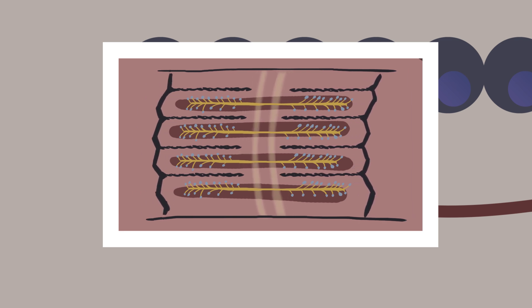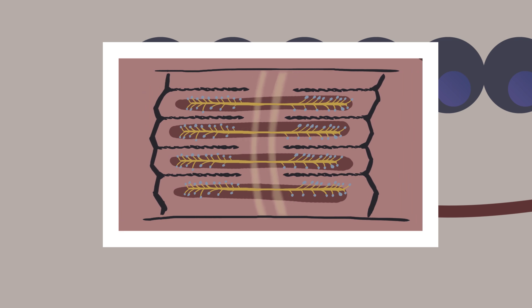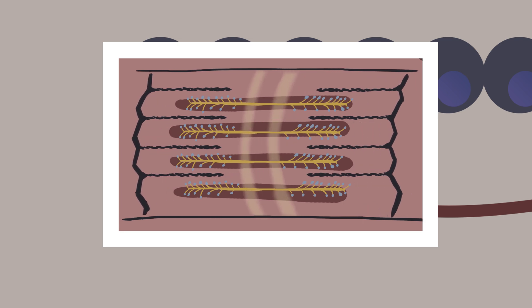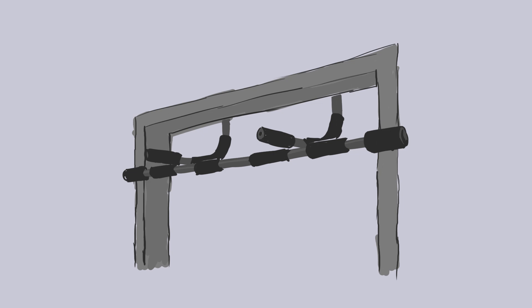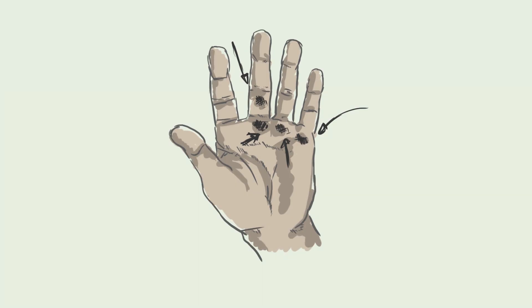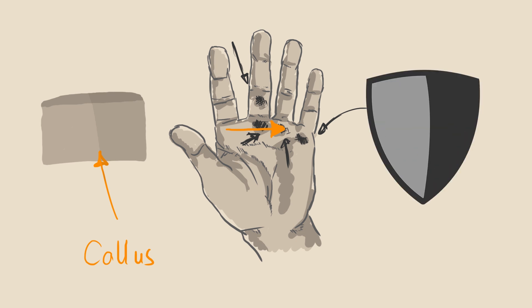If you do pull-ups, the chances are you're gonna get calluses on your hands. The skin on the palm of your hands will thicken and harden to form a layer of armor to protect your hands from tears and blisters.